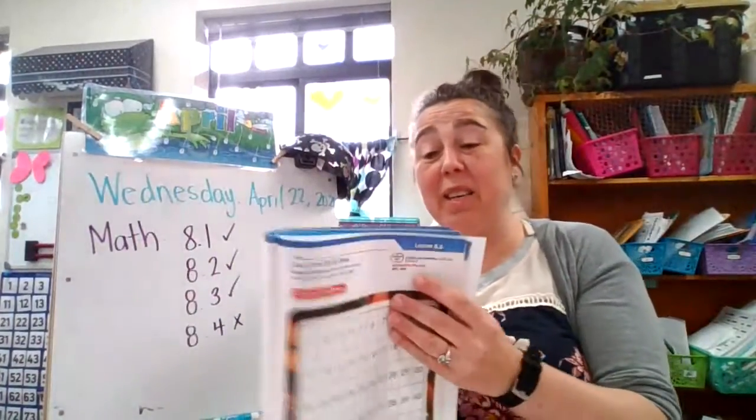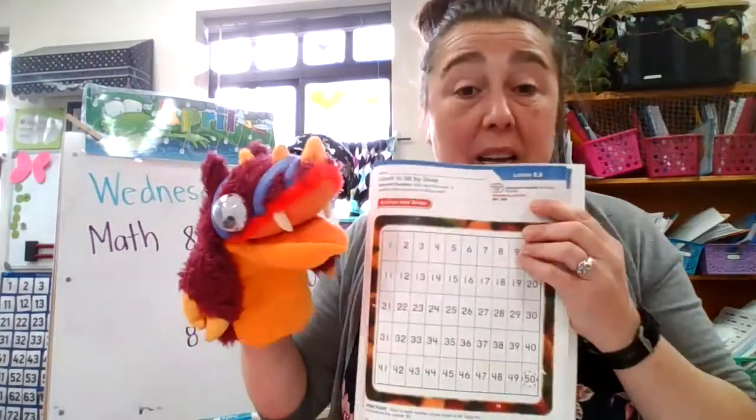All right, Mr. Boggley Eyes, here we go. Ready? Let's count together. 1, 2, 3, 4, 5, 6, 7, 8, 9, 10, 11, 12, 13, 14, 15, 16. Come on, count with me. 17, 18, 19, 20.